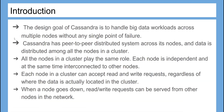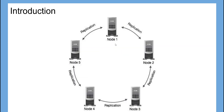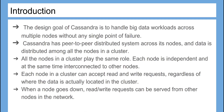The design goal of Cassandra is to handle big data workloads across multiple nodes without any single point of failure. Cassandra has a peer-to-peer distributed system across its nodes, and data is distributed among all the nodes in a cluster.